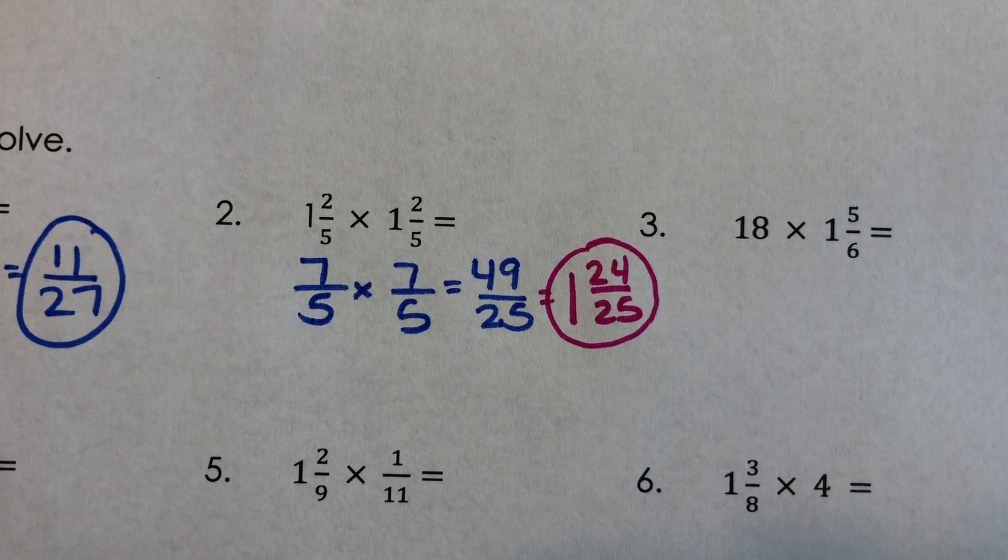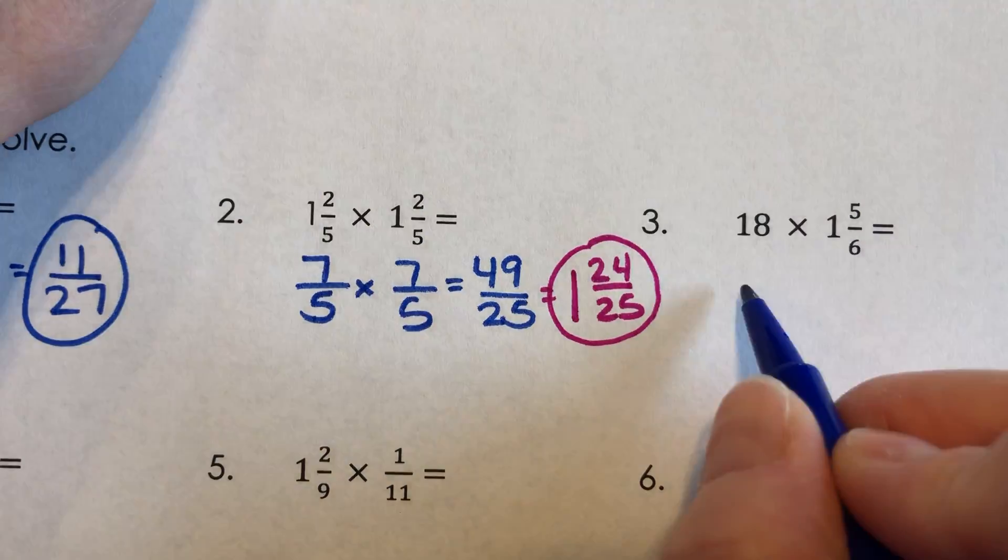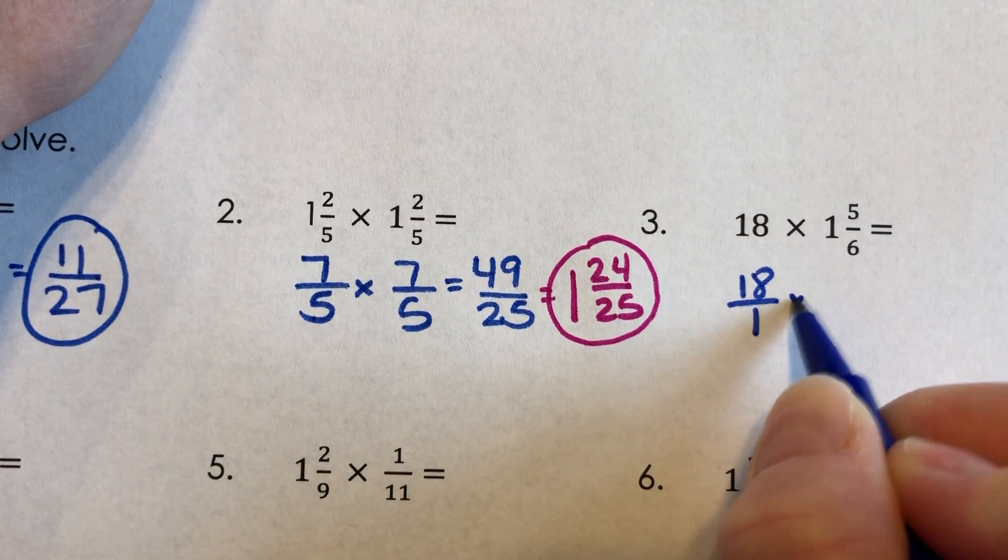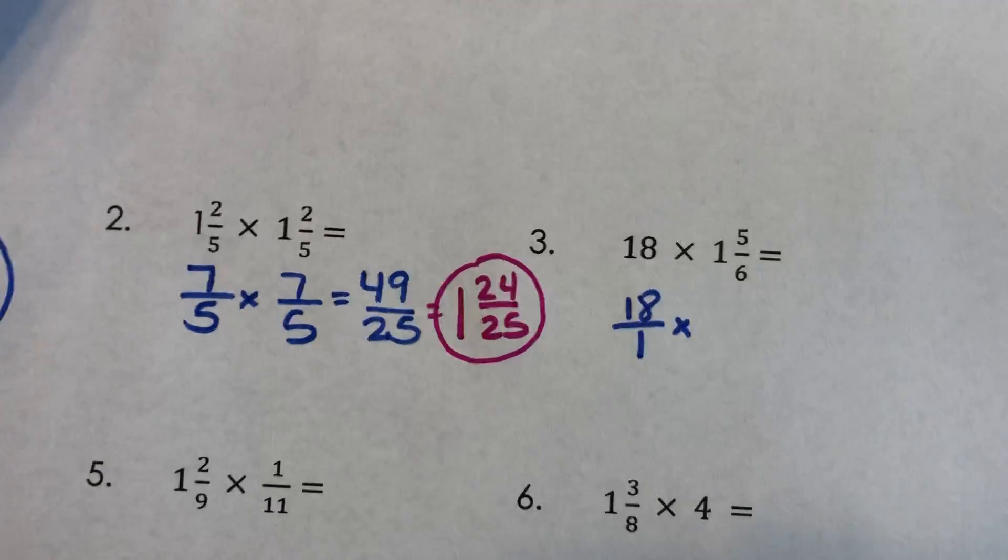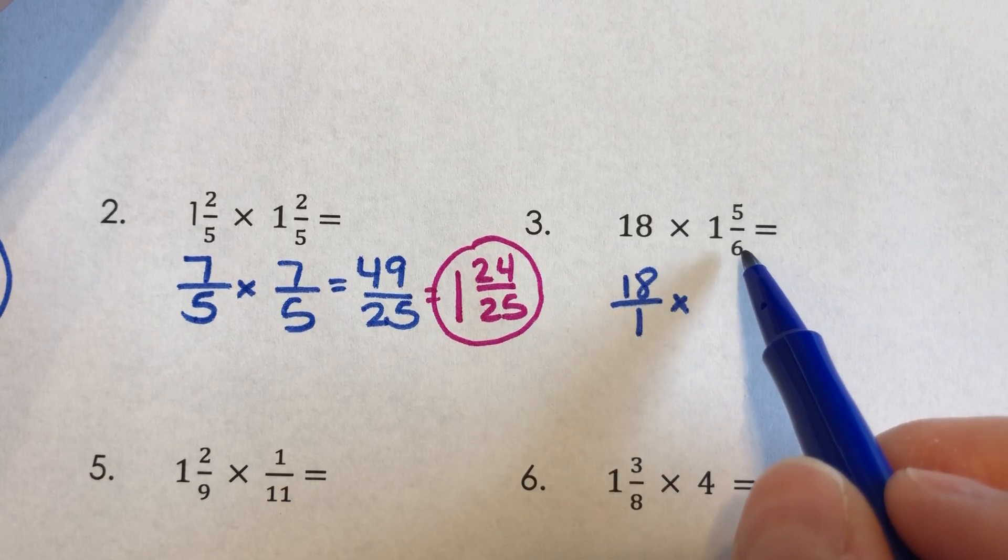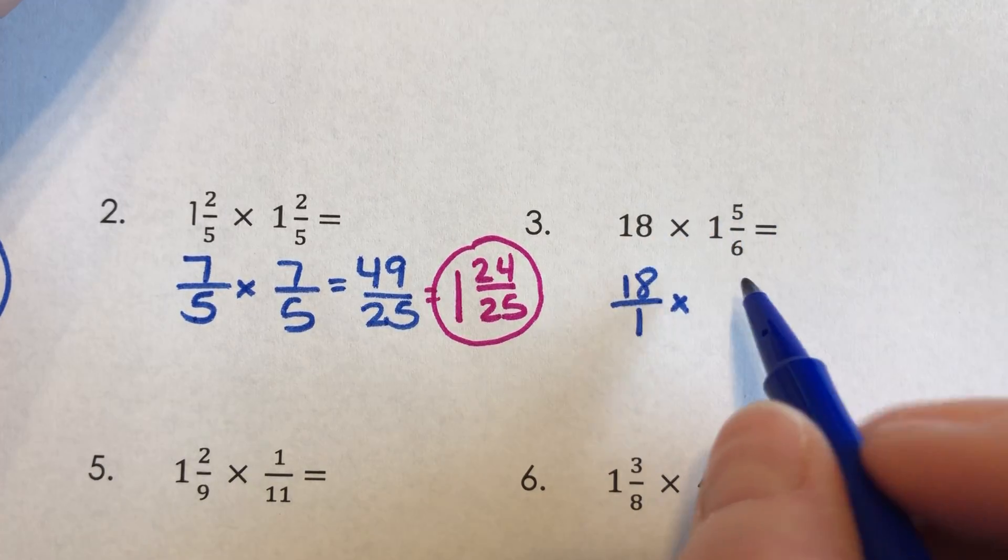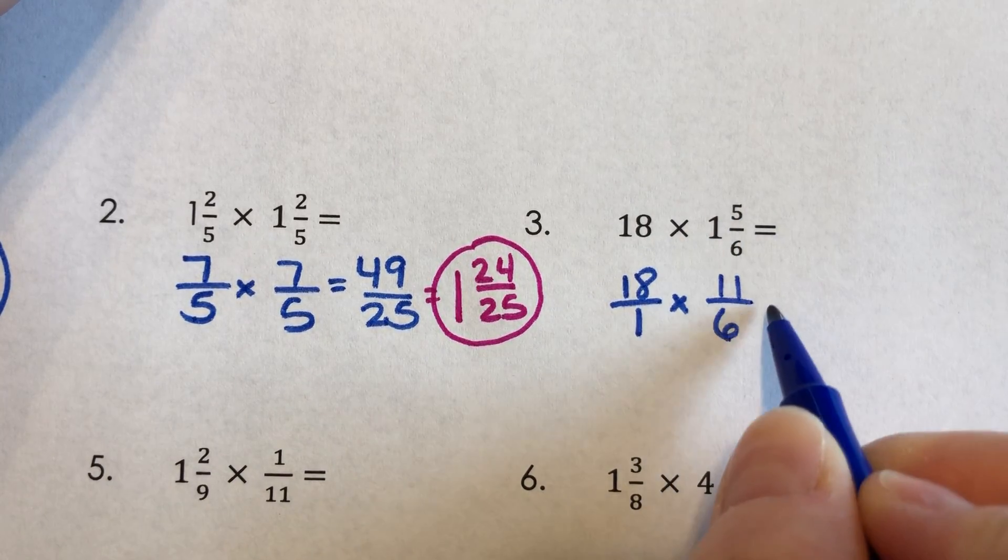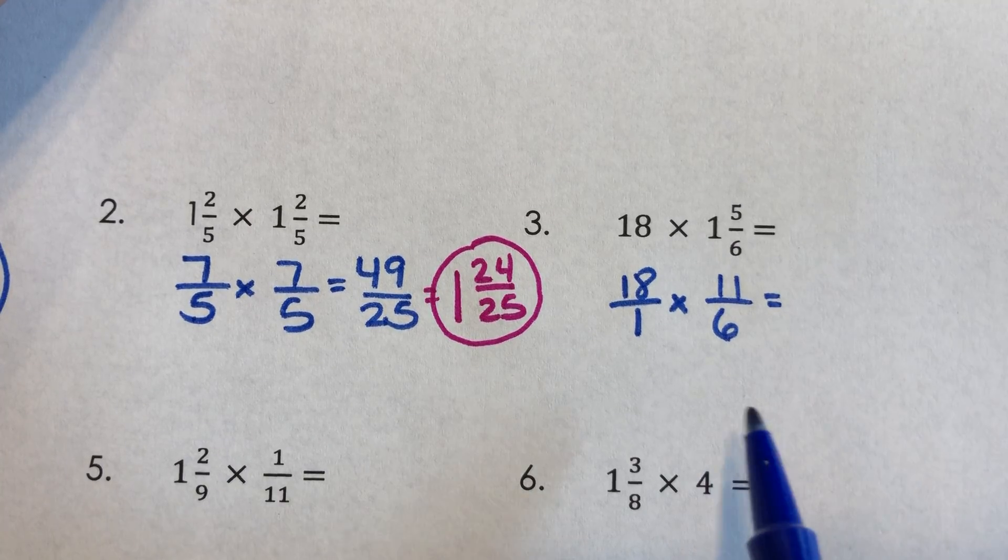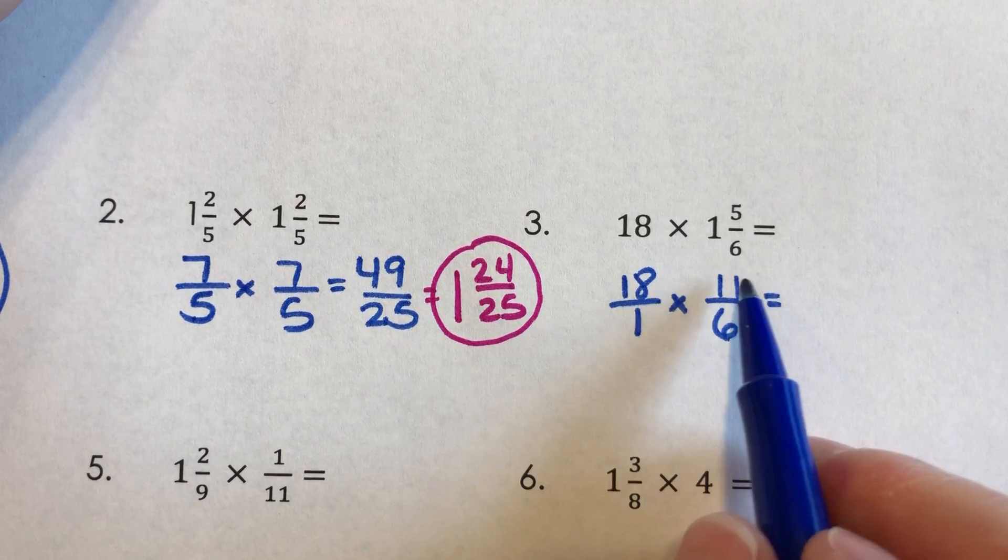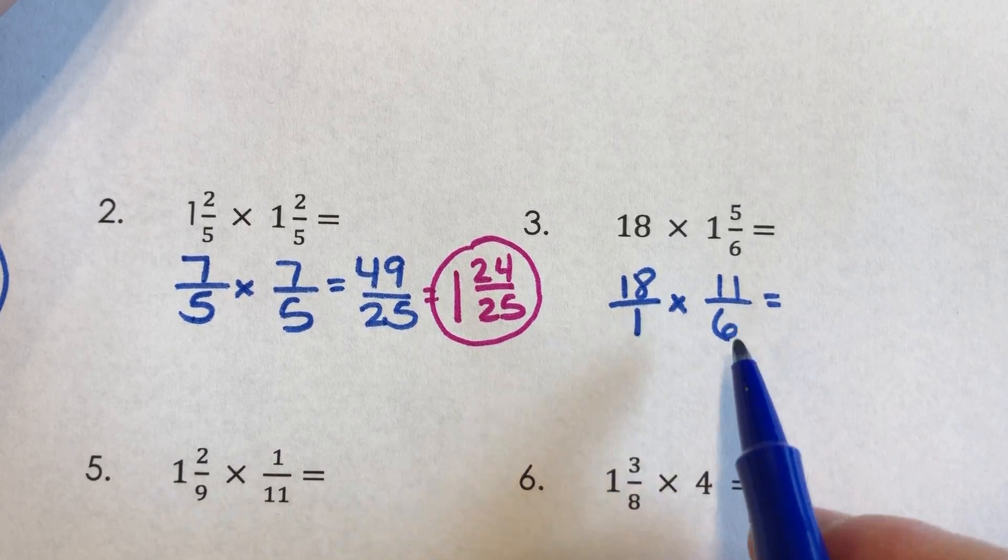For number three, I see a whole number. So when I rewrite this, I'm going to go ahead and write 18 over 1. I'm going to change this 1 5/6 to an improper fraction. 6 times 1 is 6 plus 5 is 11/6. Now before you start getting all huffy saying, Mrs. Trombley, I don't want to multiply 18 by 11. How can you do this to us? Look it.